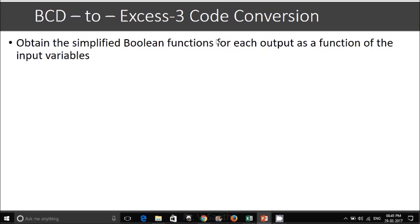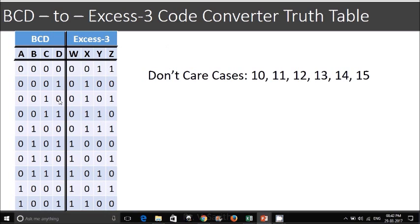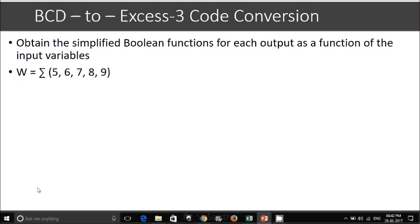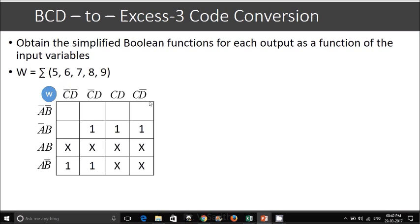The next step in the code conversions design is we are supposed to get the output expressions. W you can observe from the previous slide is sigma of 5, 6, 7, 8, 9. If we go for a K map, we will get in this form. Mapping goes like this. W is equal to A plus BD plus BC.